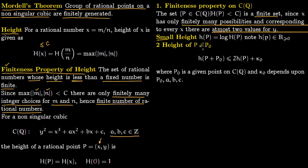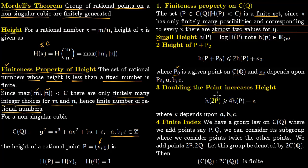Now we state two key results. First, for a given point P₀ on the curve, the height of P plus P₀ satisfies: h(P + P₀) ≤ 2·h(P) + κ₀, where κ₀ depends on P₀ and the coefficients a, b, c. Second, doubling the point: using the addition formula to compute 2P, the height satisfies h(2P) ≥ 4·h(P) − κ, where κ also depends on a, b, c. These results are stated without proof here.